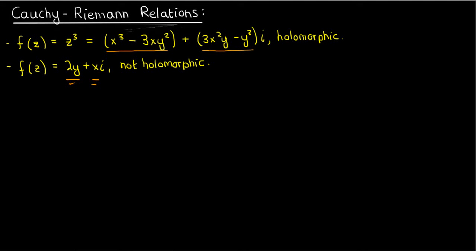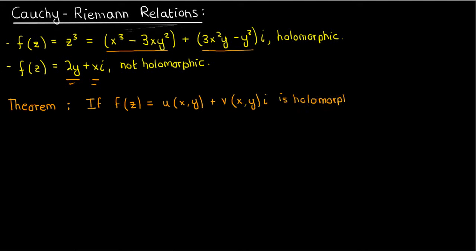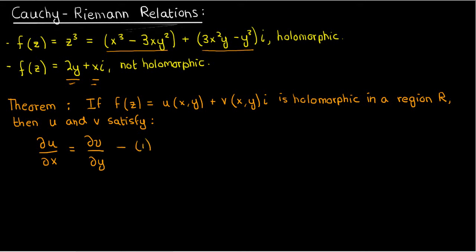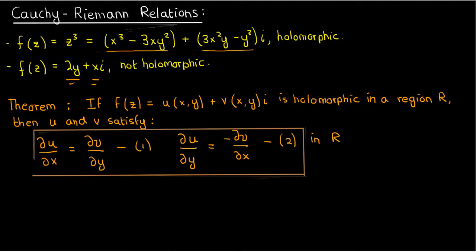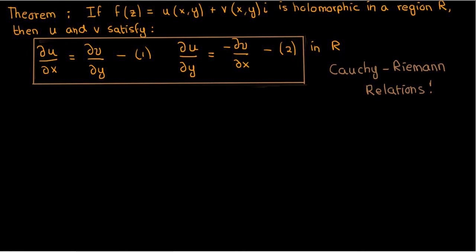The relationships between the real and imaginary parts of a complex function that need to be satisfied for it to be holomorphic are called the Cauchy-Riemann relations. There are two theorems that attest to this. The first theorem states that if I have a holomorphic complex function, then its real and imaginary parts satisfy du/dx = dv/dy, and the second relationship is that du/dy = -dv/dx. These relationships are satisfied in the region R where the complex function is holomorphic. These two equations are called the Cauchy-Riemann relations, and this first theorem says they are necessary conditions for holomorphicity — if a function doesn't obey them, it can't be holomorphic.